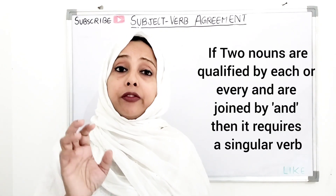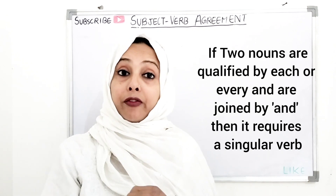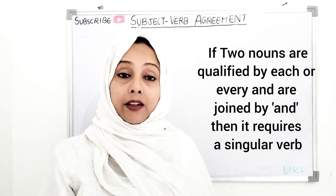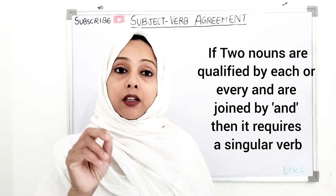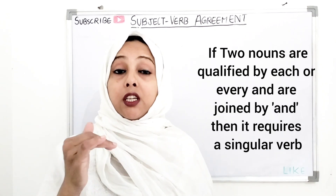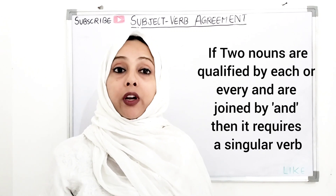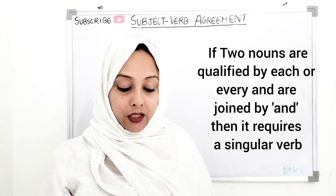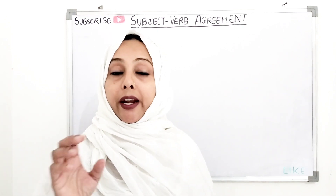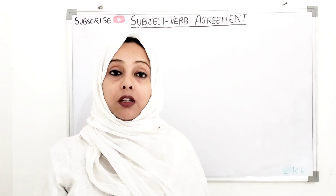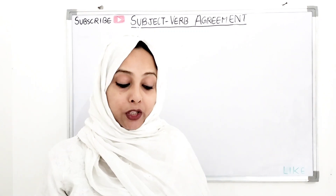If there are two nouns in a sentence and both are qualified by 'each' and 'every,' and they are joined together by using AND, then it goes with a singular verb. For example: 'Each boy and every girl was given a packet of sweets.' Here we use 'was' — a singular verb.